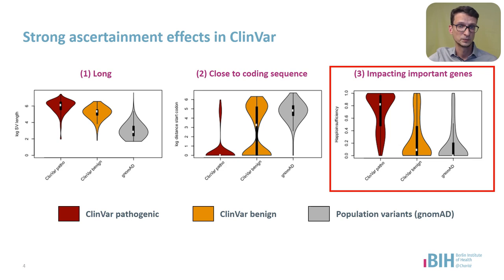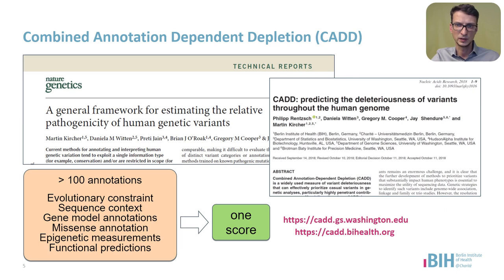So what can we do? In the past, we've overcome similar problems by using a surrogate training objective: combined annotation-dependent depletion, CADD. This refers to the depletion of functional variants in evolutionary-derived variant sets. For the interpretation of SNVs and short indels, we use human-lineage-derived alleles as proxy-neutral and contrast them with matched simulated variants as proxy-pathogenic.